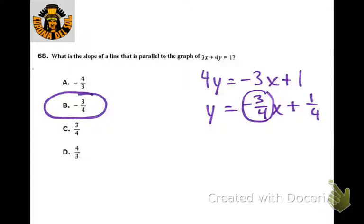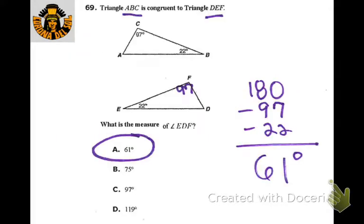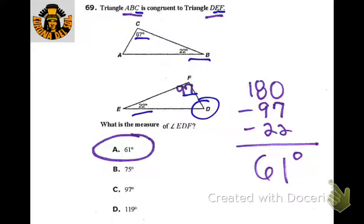The slope of the line that would be parallel — just put the equation into slope-intercept form and you can clearly see the slope. Using the congruence statement: angle C should be the same as angle F, so that's 97. Angle B is the same as angle E, so that's 22. Looking for angle EDF: 180 minus 97 minus 22 leaves 61.